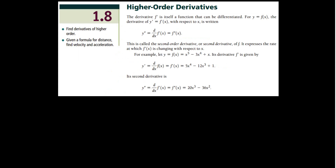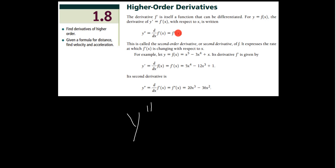Higher Order Derivatives. We have the derivative being f prime. f prime is itself a function that can be differentiated. For y equals f of x, the derivative of y prime with respect to x is written as y double prime. We could also think of it as d/dx of f prime of x equals f double prime of x, or the second derivative of x. This is called the second order derivative or second derivative.